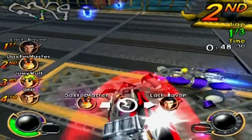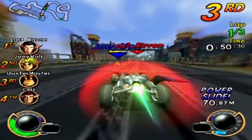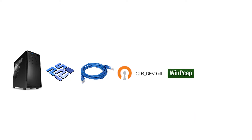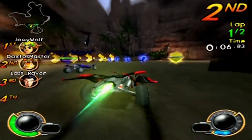You will require these things in order to connect: a strong PC obviously to run the game without any lag, the PCSX2 emulator, an Ethernet network cable, tap adapter setup, CLR Dev9 plugin, WinPC app, and Xlinkai software installed. The softwares and plugins I mentioned, I'll link them all in the description.